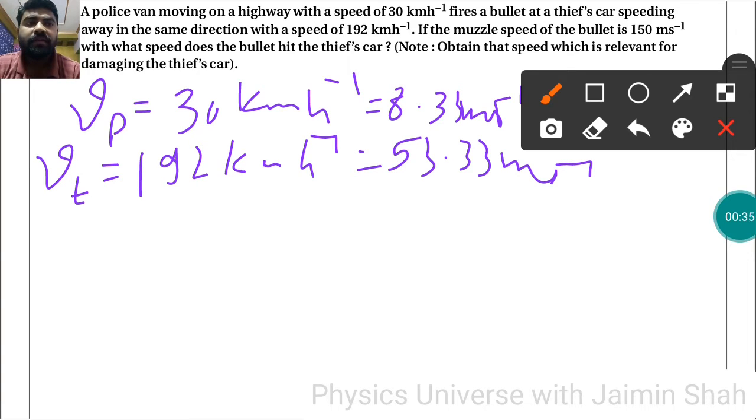If the muzzle speed of the bullet VB is equal to 150 meters per second, with what speed does the bullet hit the thief's car?